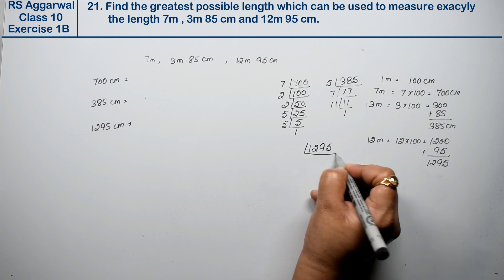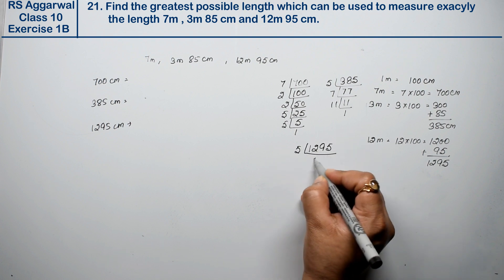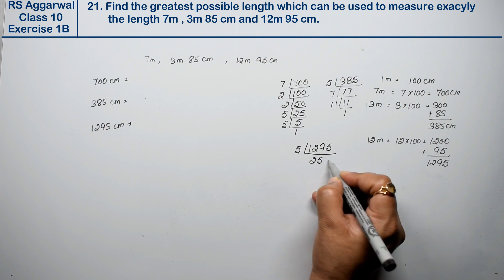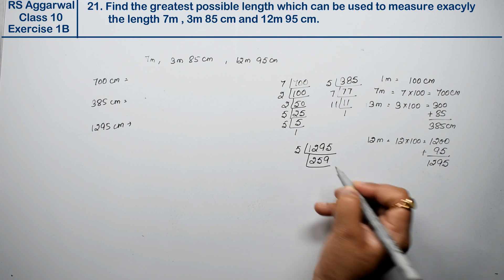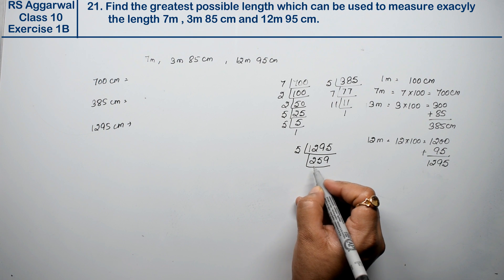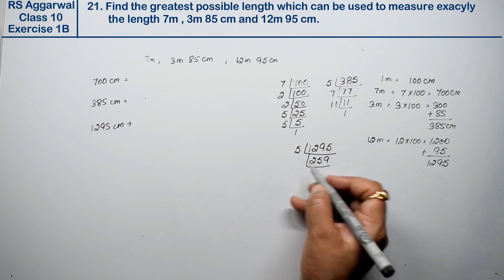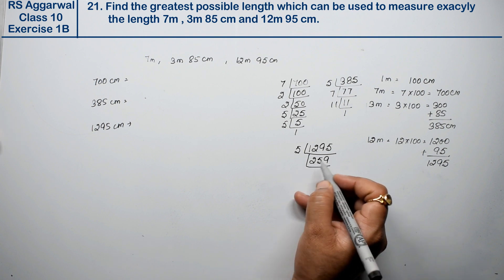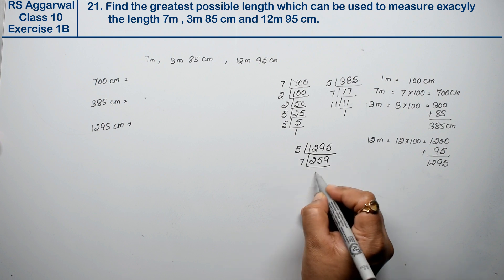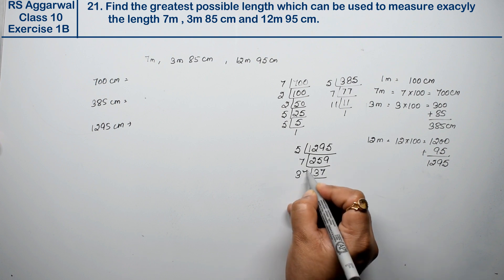Last is 1295. Dividing by 5 gives 259. 259 divided by 7 gives 37, and 37 is prime. So 1295 equals 5 times 7 times 37.